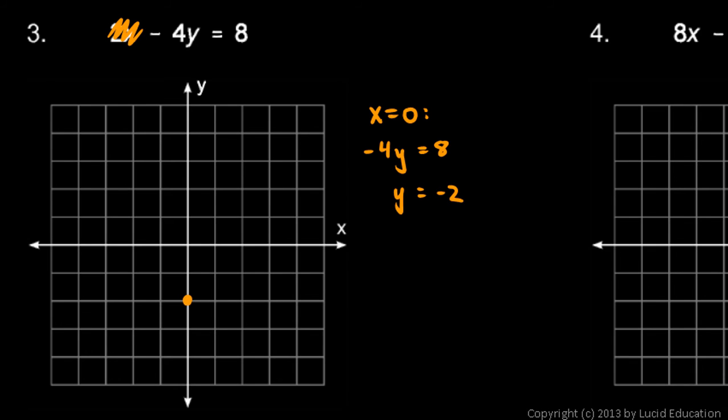So that's my y-intercept down there. And then if I let y equals zero, then I have 2x equals eight. You could think of this as 2x minus zero equals eight. But saying 2x equals eight means x has to be four. So there we go.